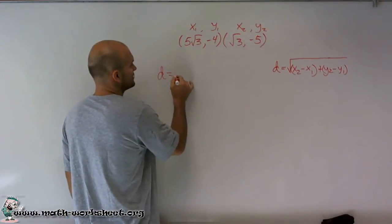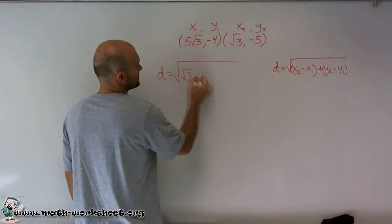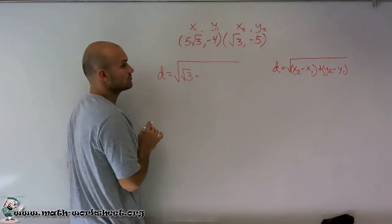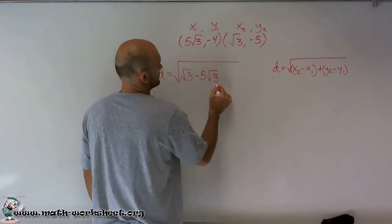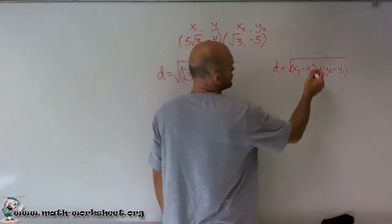So I'll say the distance is equal to the square root x2 is square root of 3 minus 5 square root of 3. And then we have, that's in parentheses, oh, I'm sorry, squared.